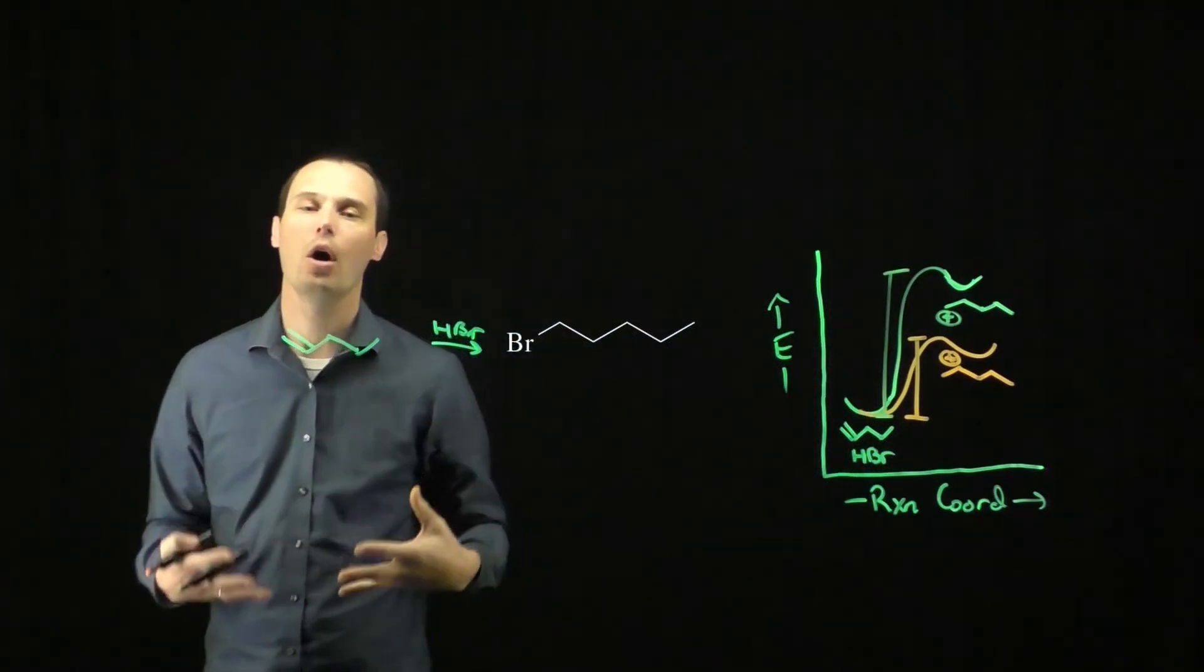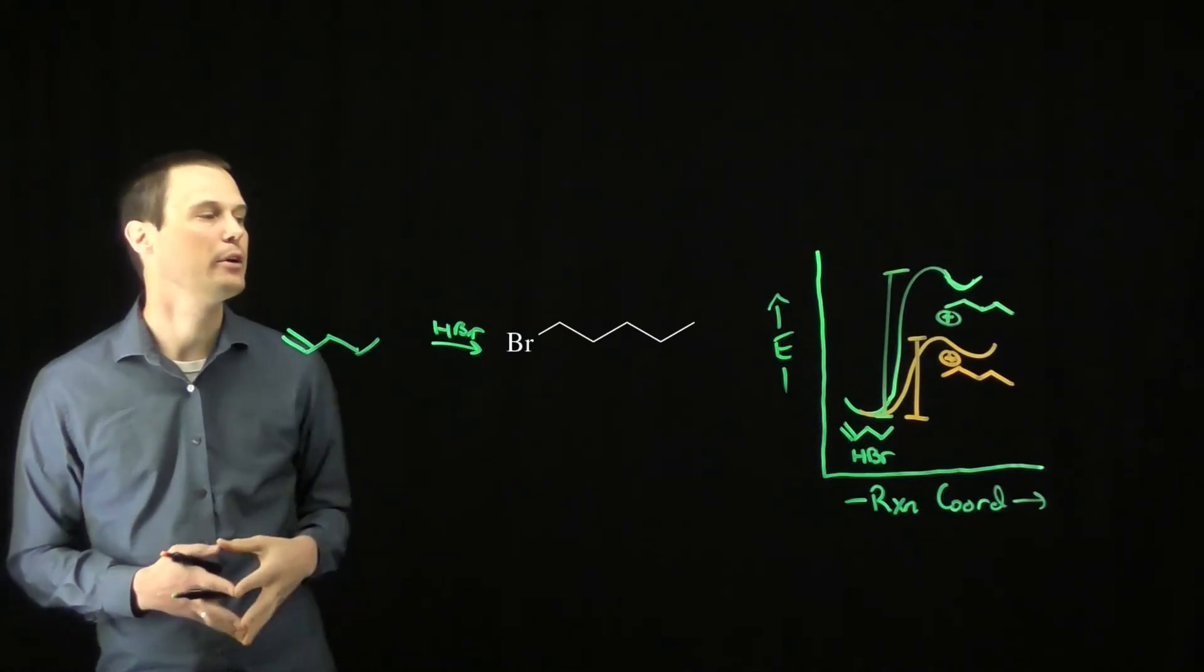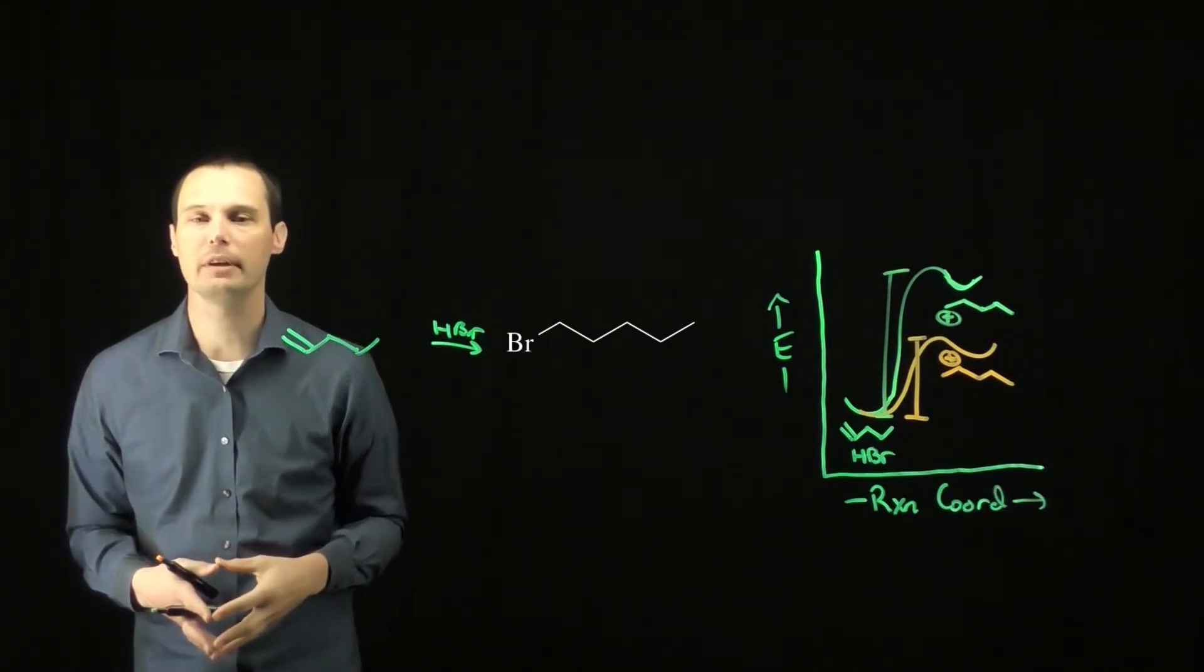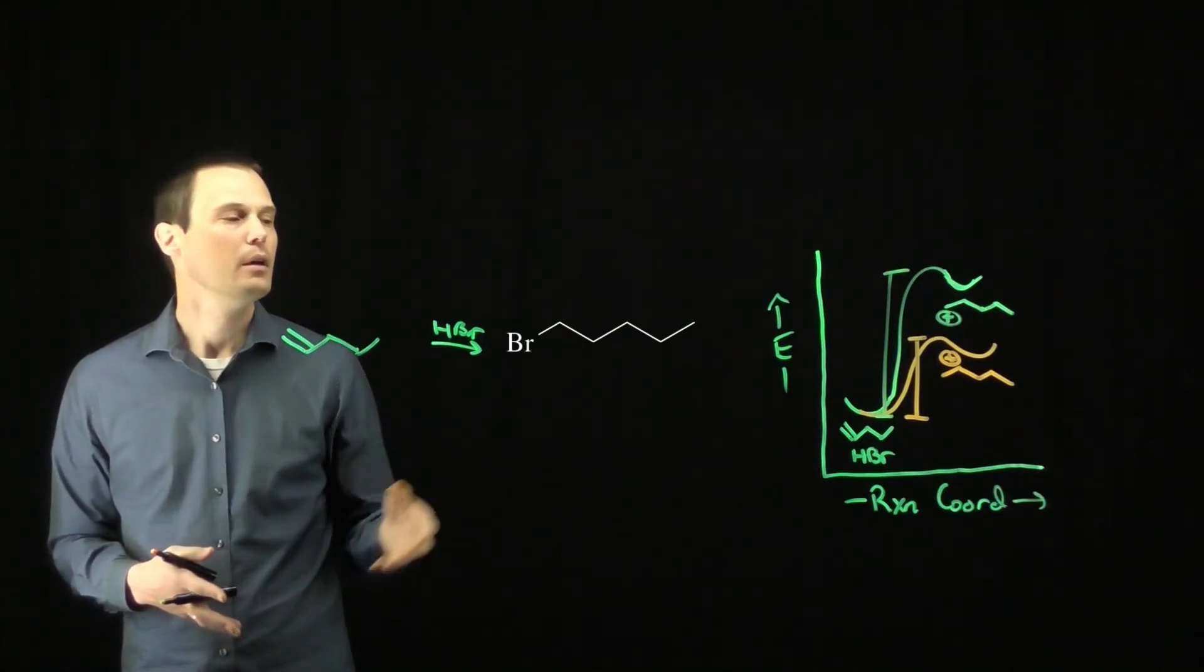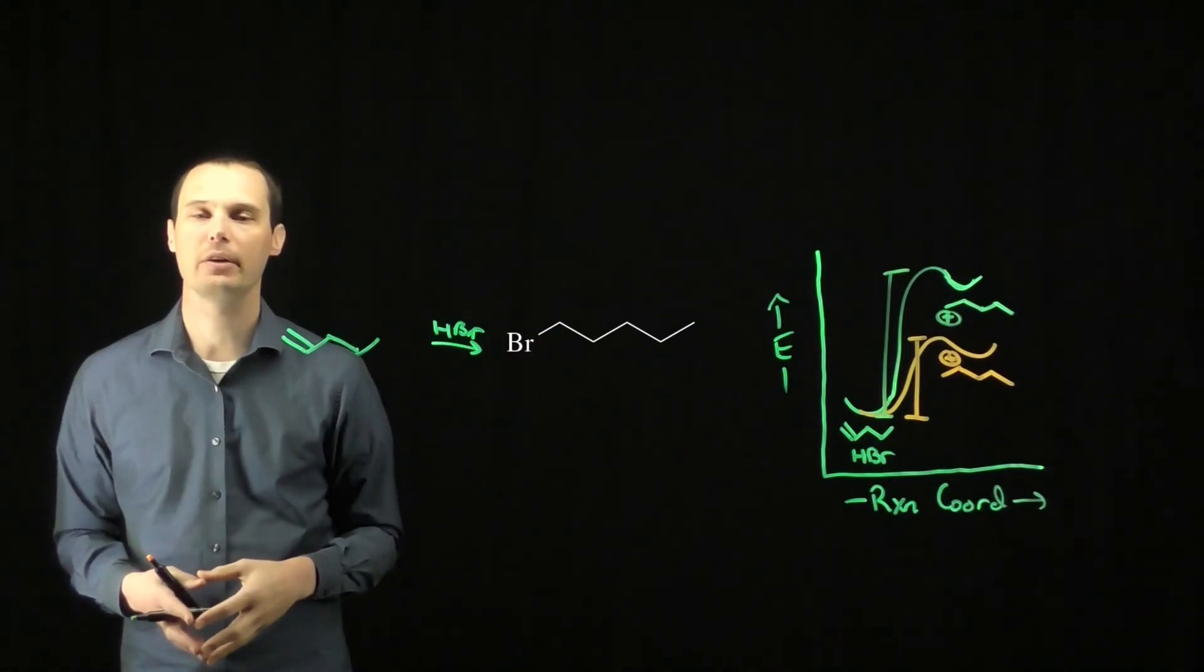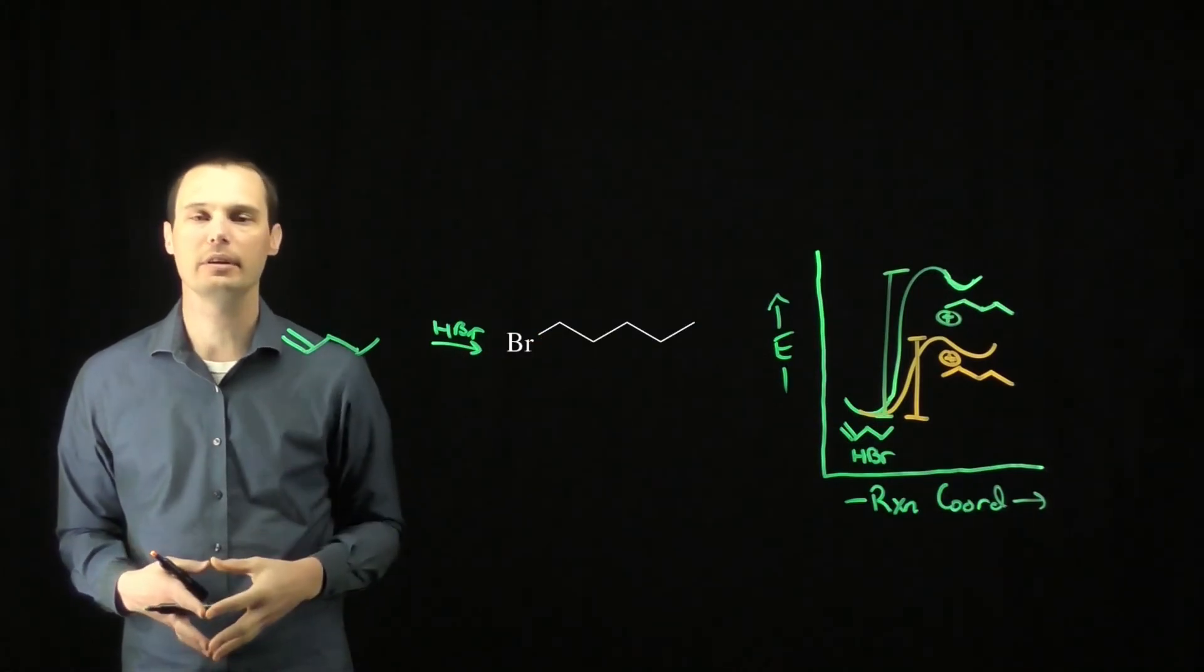So the secondary carbocation will always form faster than the primary carbocation for a generic electrophilic addition of an alkene. That means the primary carbocation can't form, which means the primary alkyl halide cannot form under standard conditions.